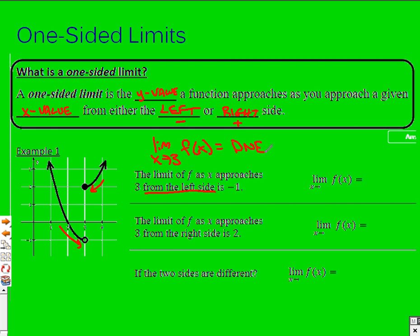If we want to know just from the left side, the y value we're approaching is negative 1. The way you write that is the limit as x approaches 3 from the left-hand side, the negative side, equals negative 1. From the right-hand side, with a plus sign, that value is 2. So if the two sides are different, the general limit does not exist. If they're the same from both sides, the limit exists and equals that value.